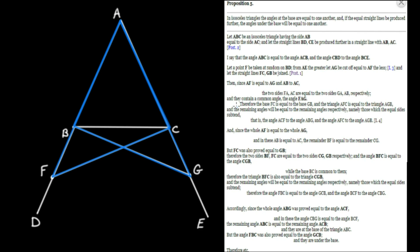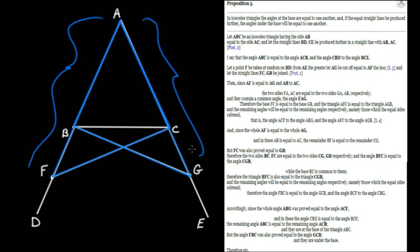Since AF is equal to AG — by the construction using Proposition 3 where we cut AG off from AE equal to AF — and AB equals AC, which was given since this is an isosceles triangle, the two sides FA and AC are equal to the two sides GA and AB respectively.